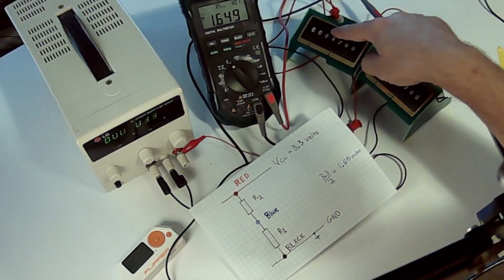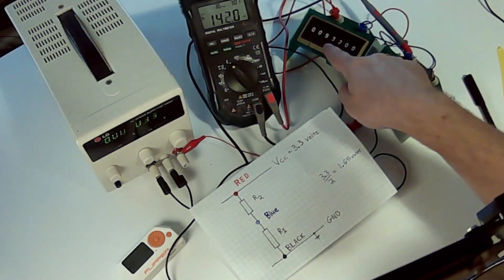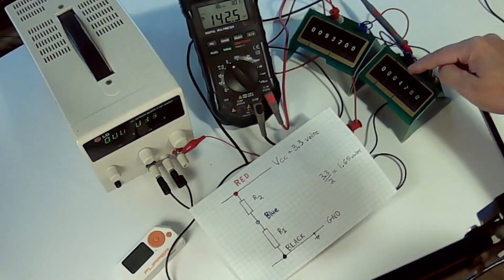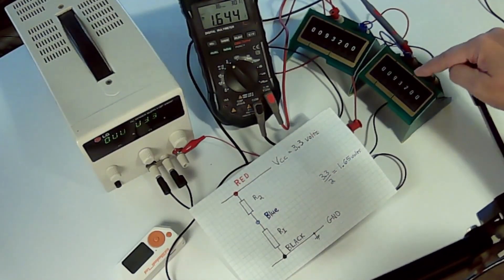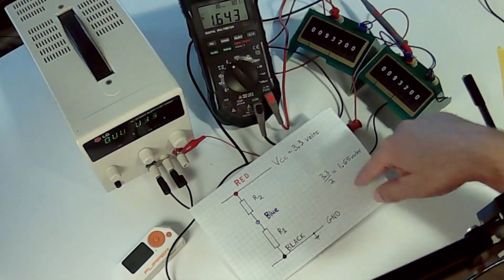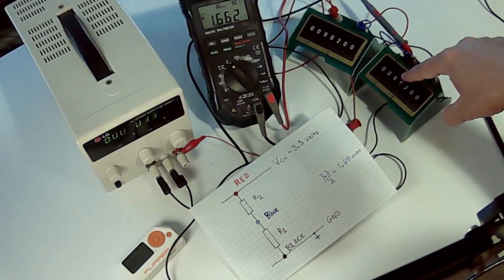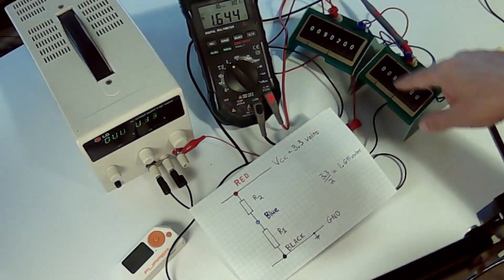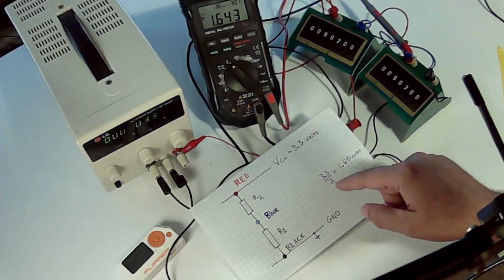If I change this to say 93.2, then if we go up here to 93.2 we're again at 1.65. So it doesn't matter what this value is. If you have the other resistor at the same value and they're matched, then your voltage should be half of whatever VCC is.